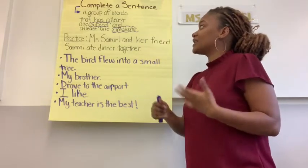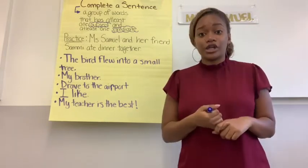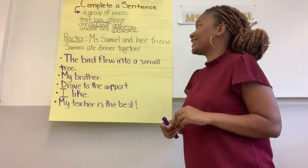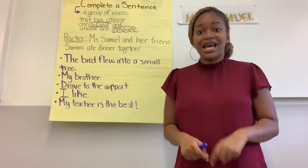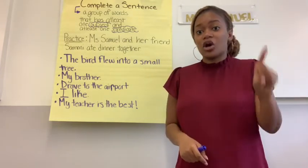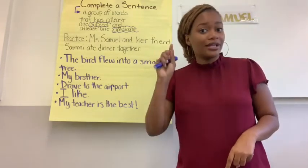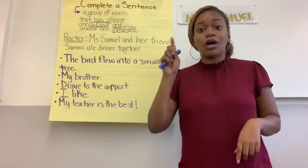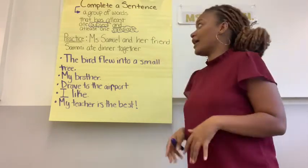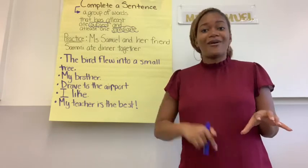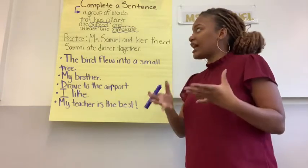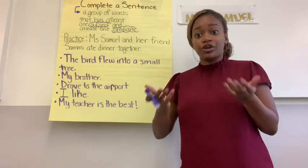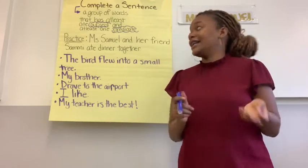We know that a sentence is a group of words that has at least one subject and at least one predicate. We know what our subject is by now and we know what our predicates are, so we just have to identify if we see at least one of those in a sentence.